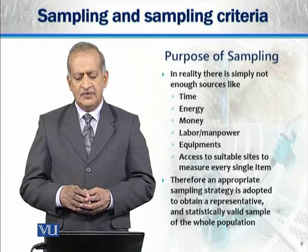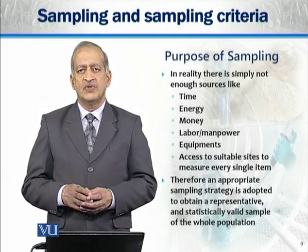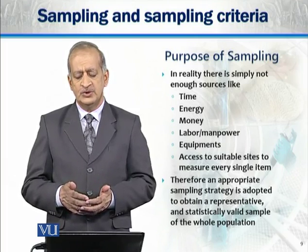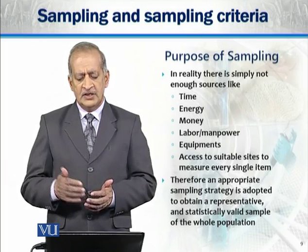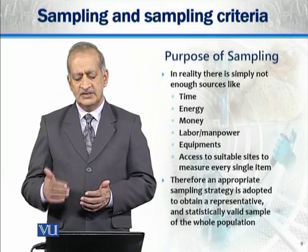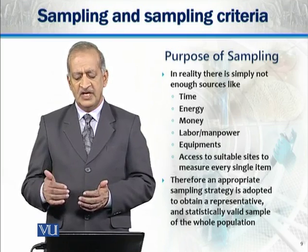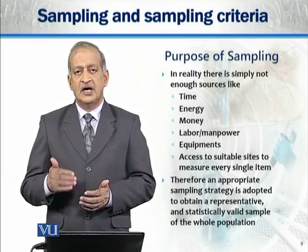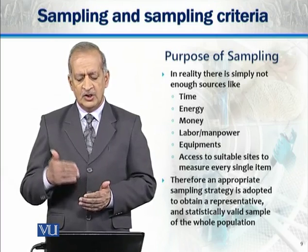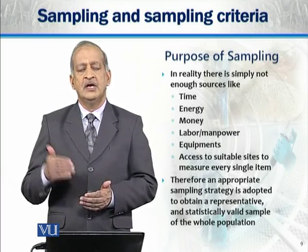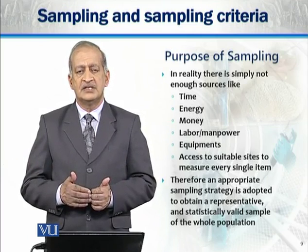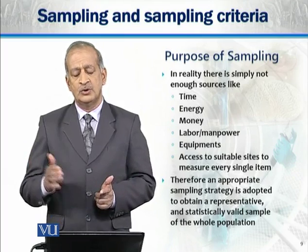The purpose of sampling, as we discussed earlier, is that we cannot study the whole population because we don't have enough resources. To save time, energy, money, labor, manpower, and equipment, instead of studying the whole population, we conduct a study at a smaller level. From the results we get, we apply them on a broader spectrum and say that this is applicable on the whole population.